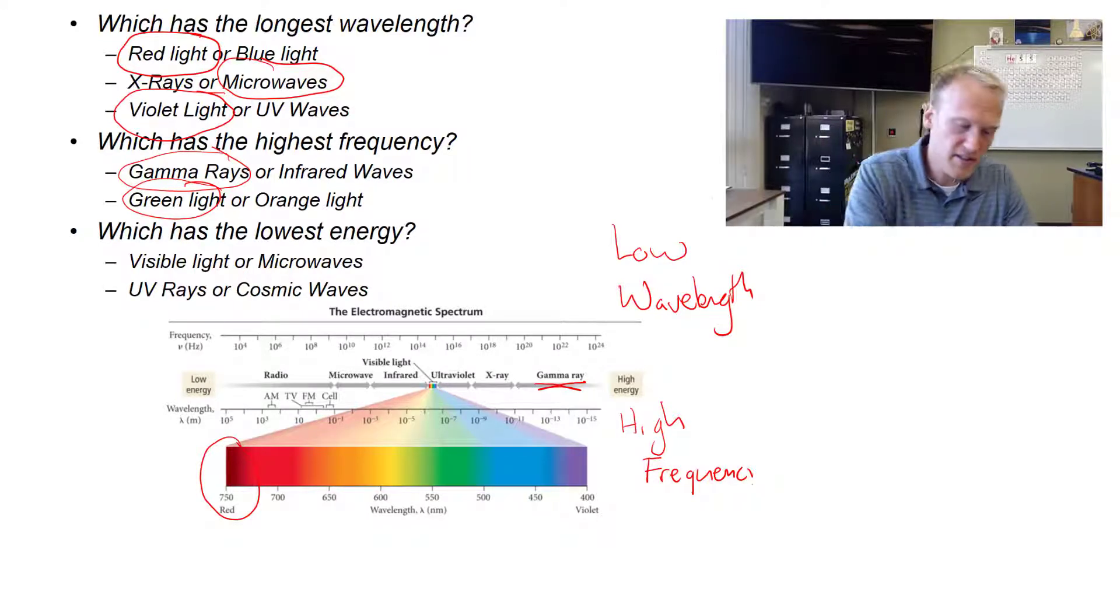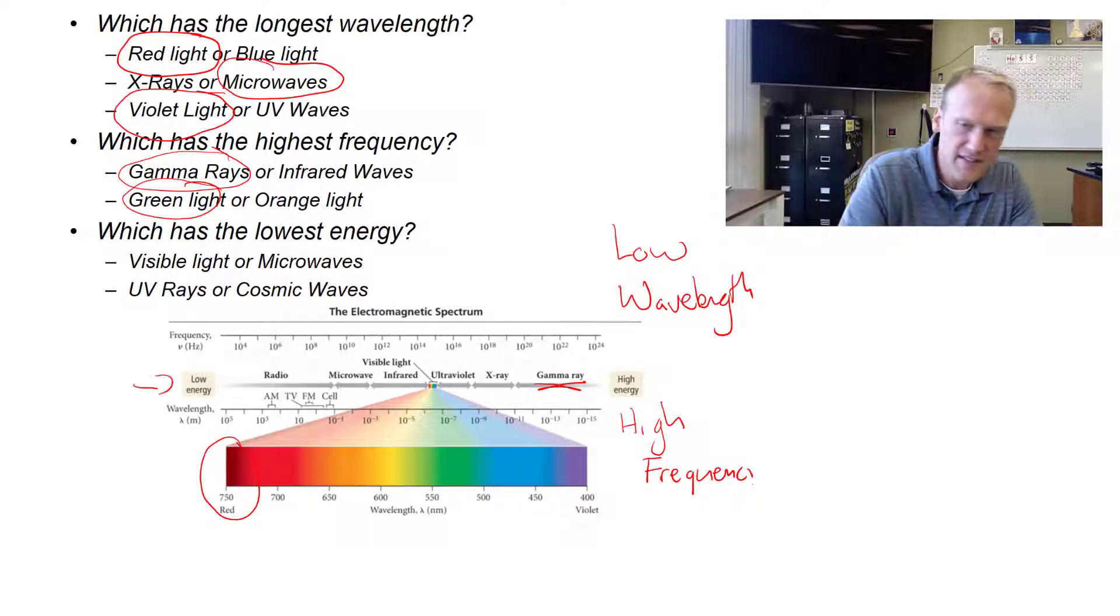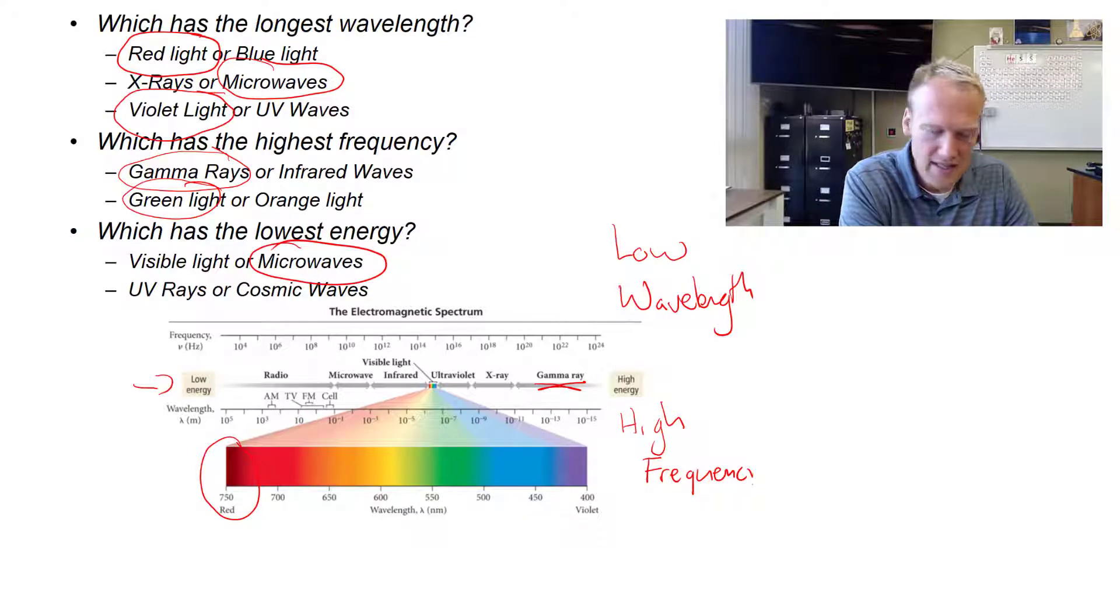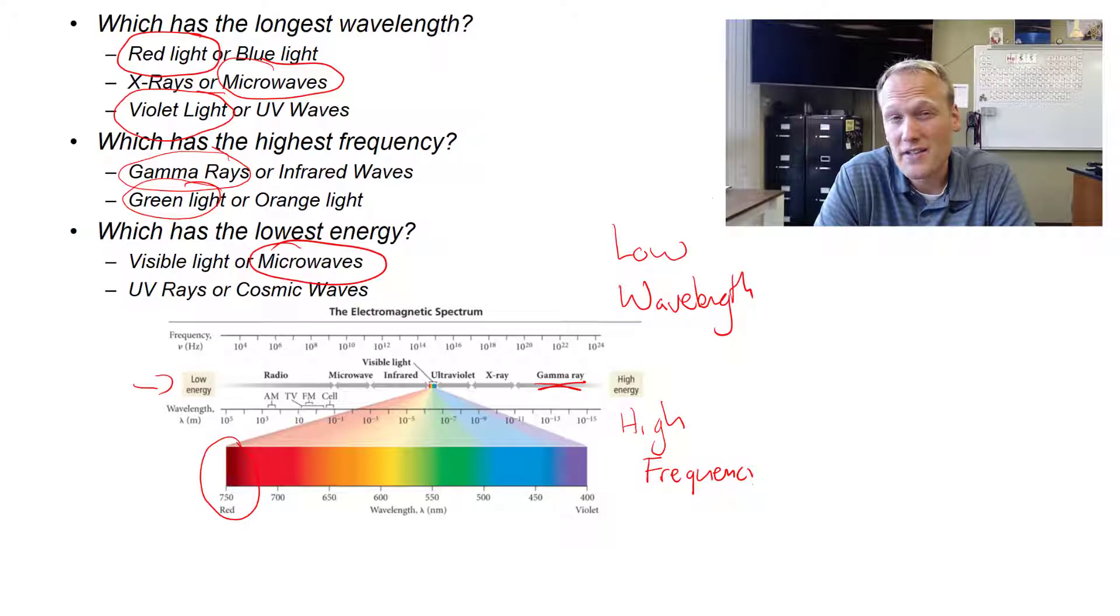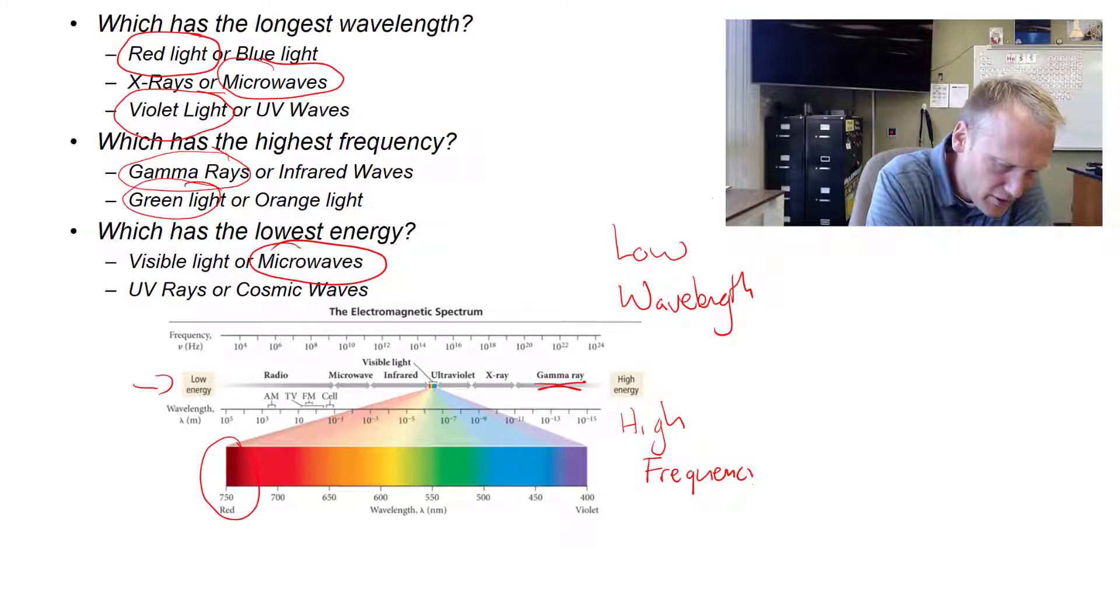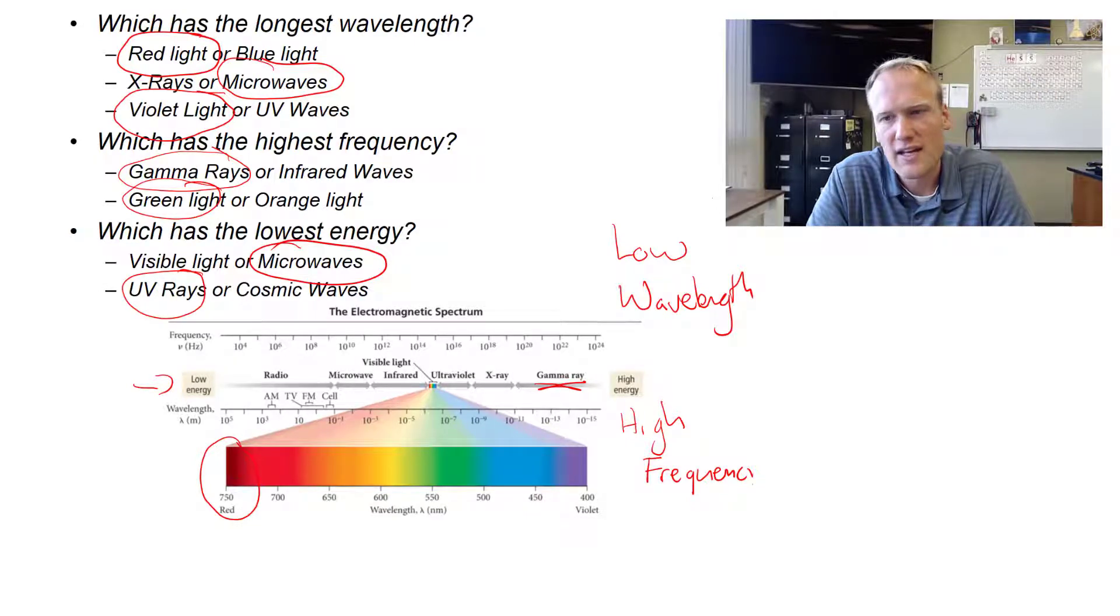Which has the lowest energy? Low energy is down on this end. Visible light or microwaves? Microwaves would have lower energy. UV or cosmic rays? Cosmic rays are very high frequency waves from outer space. Therefore, UV rays would have much lower energy than cosmic waves.